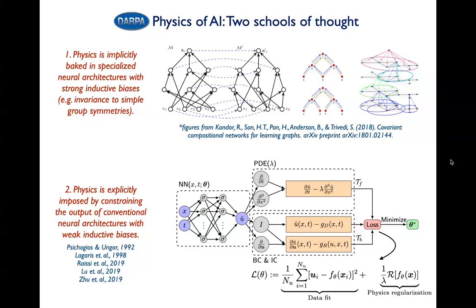The second school of thought, which is where this talk will be more focused on, is working with conventional network architectures. We use neural networks to represent the solution to our differential equations - typically fully connected or convolutional networks - with fairly weak inductive biases. We try to encode the physics during training using penalty functions or regularizers in our training objective. This is not a really new idea; the first people who tried this for solving differential equations go back to the early 90s, and this whole idea was recently revived a few years ago.